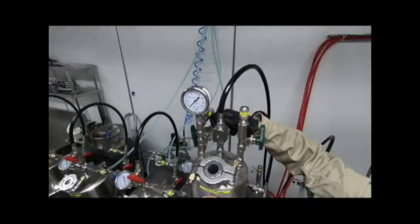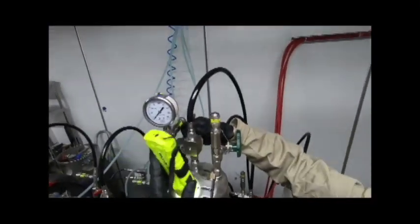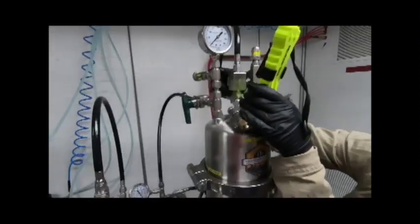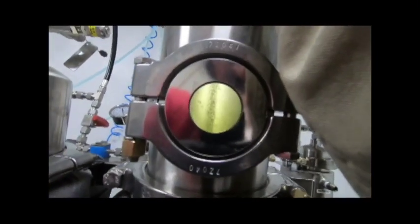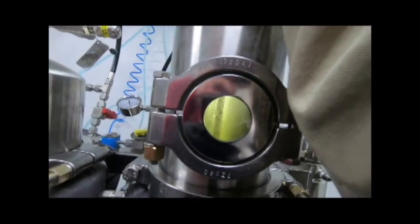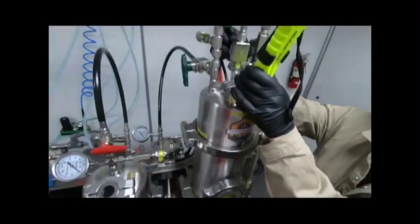Open large black valve located on top of the collection column. Using flashlight visually inspect flow of gas into collection column. If gas is flowing proceed to step 20. If not ensure all valves at step 16 through 18 were open correctly.